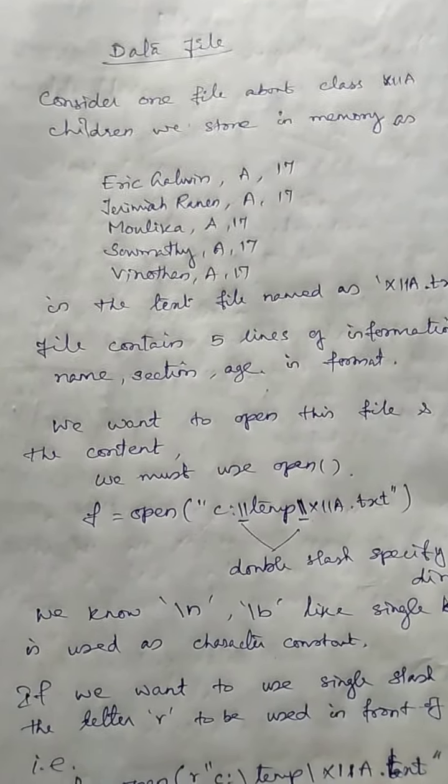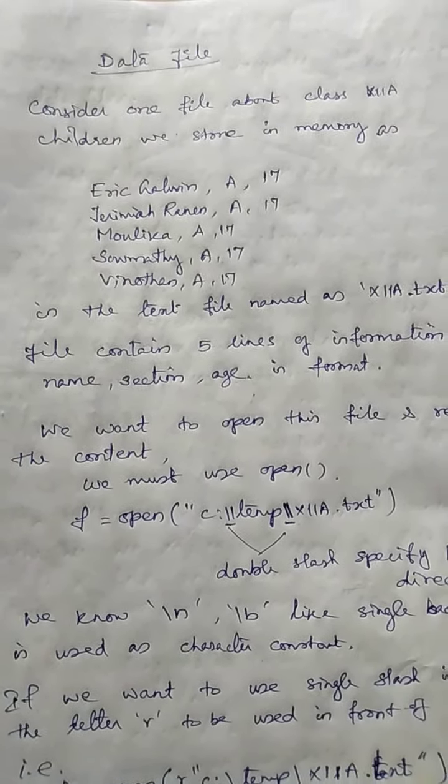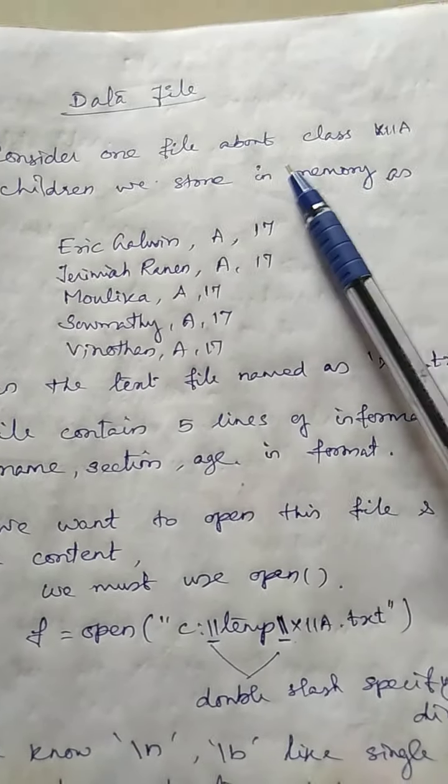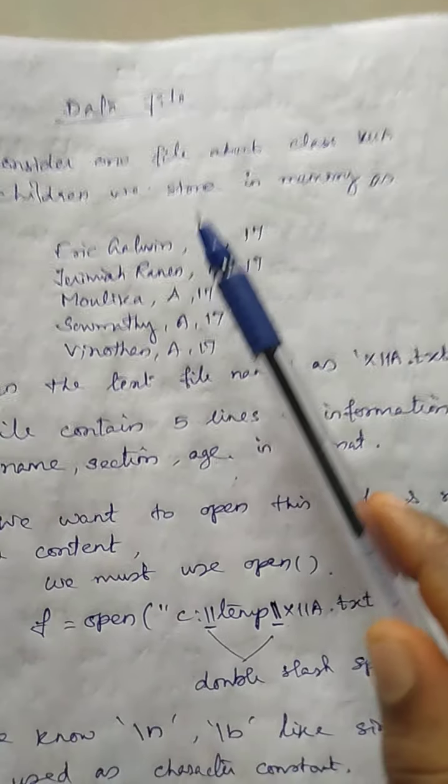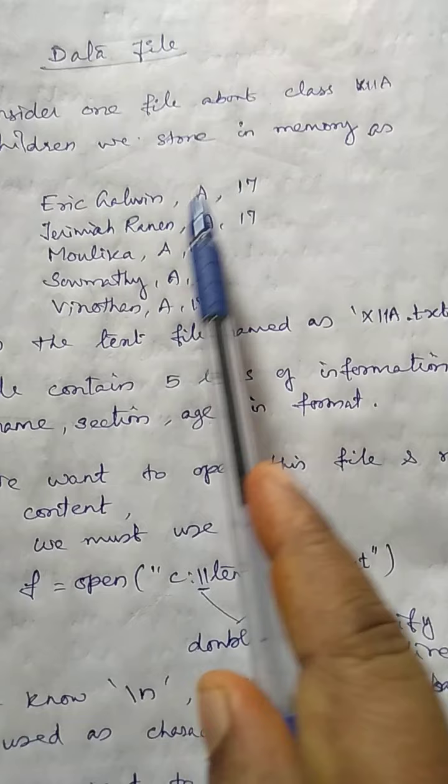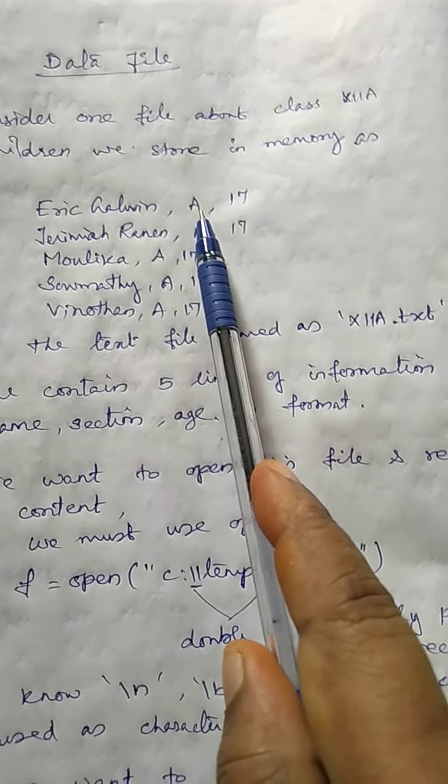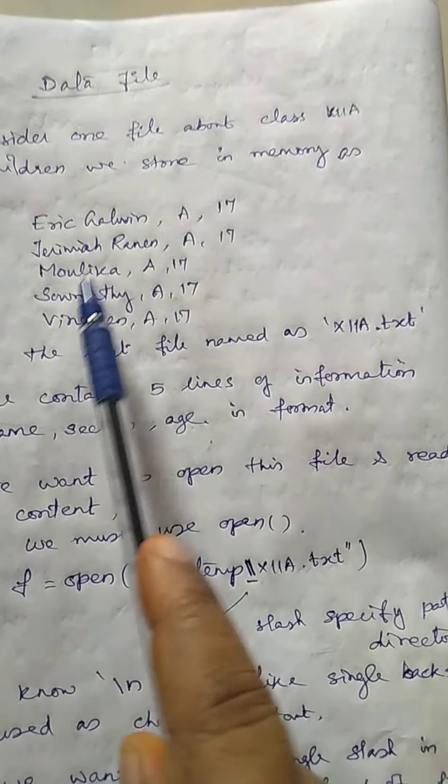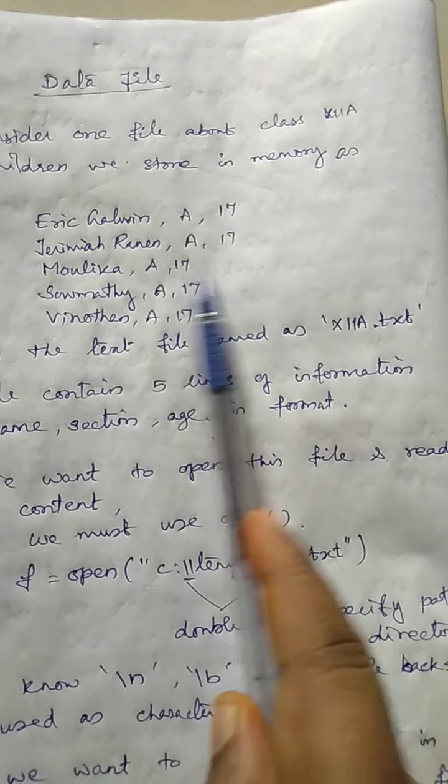Now we can discuss about an example. It will be easy to understand. Consider we have one file in memory about our 12A class children. We are storing the memory content as first name Eric Galvin, comma A. He belongs to class A, 17 years old. Jeremia Rennan, A, 17 years old. Maulika, A class, 17 years old.